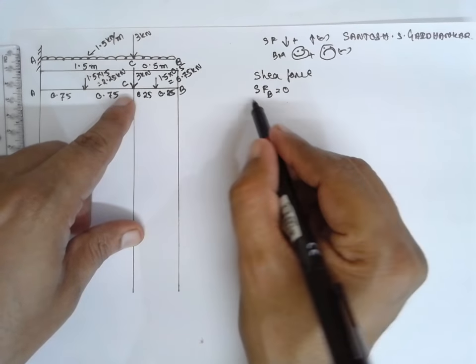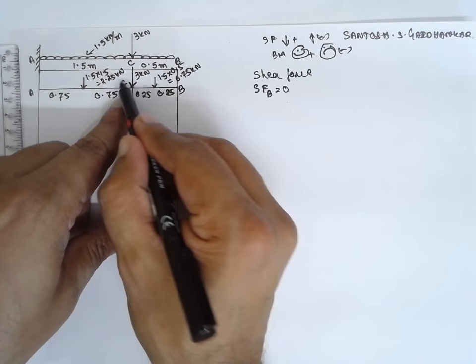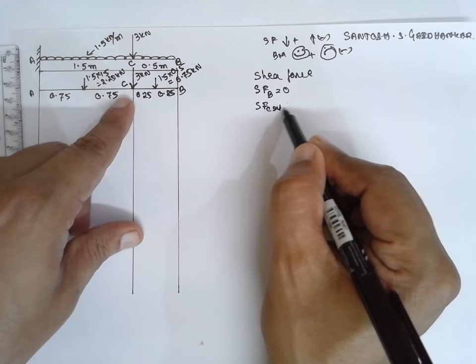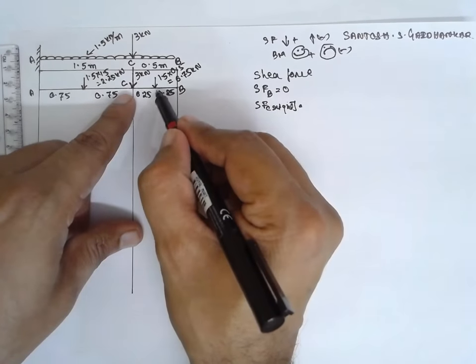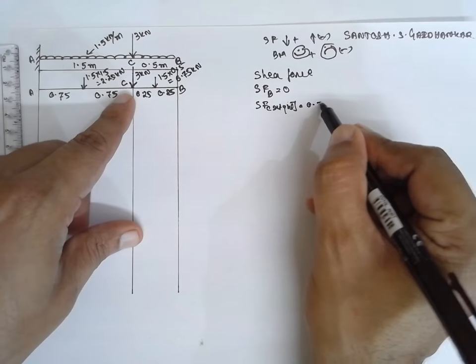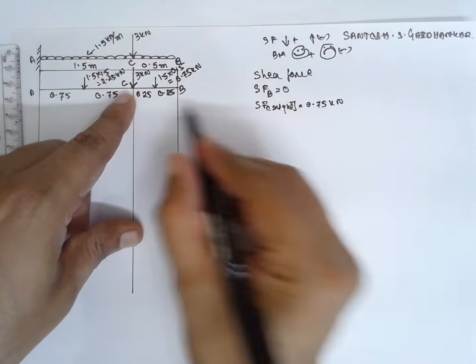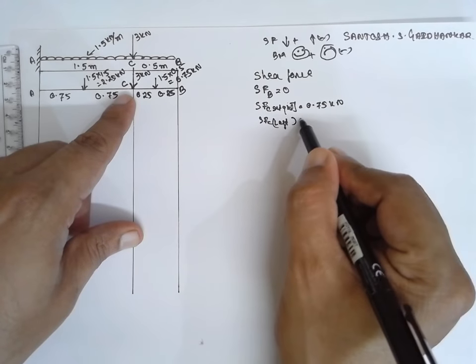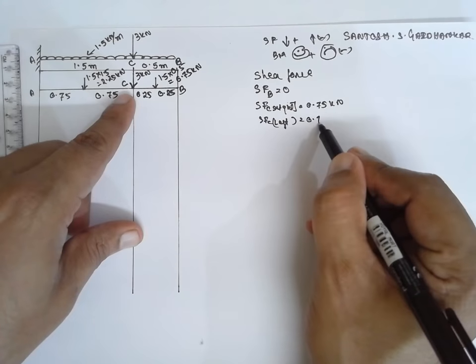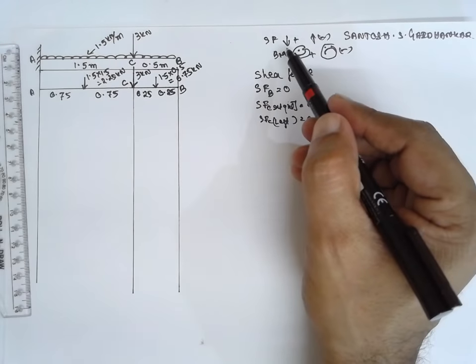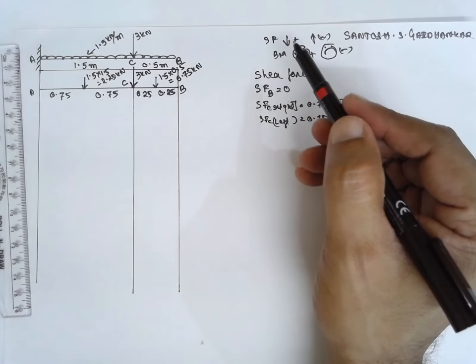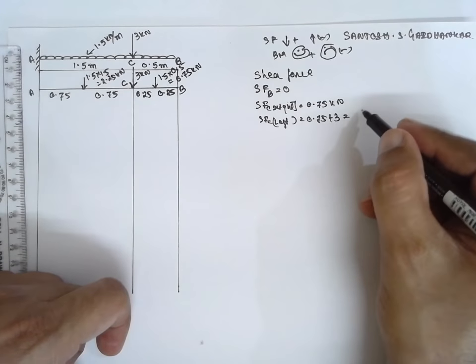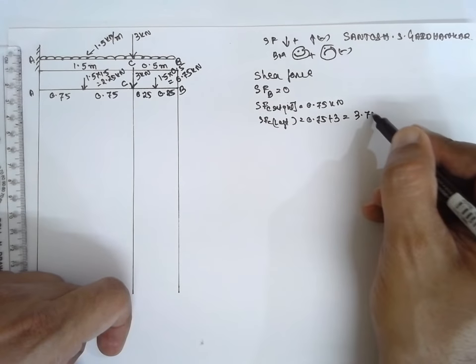Next, at SF at C. SF at C, there is a load. Therefore, you have to consider left and right. SF at C, first I will consider right side. Right side, there is only one load, that is 0.75 kilonewton. SF at left side is 0.75 plus 3 because downward arrow I have considered as positive. If you add it, the value will be 3.75 kilonewton.